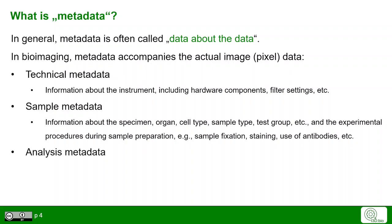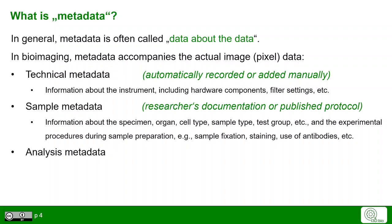Moreover, analysis metadata is very often important to understand how images were used for the research process. Technical metadata are mostly recorded automatically by the machines. However, they can also be added manually if missing. The sample metadata is typically found in the researcher's documentation or it could be in a published protocol.